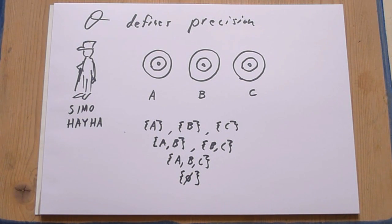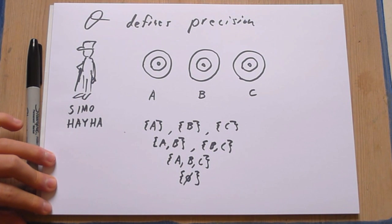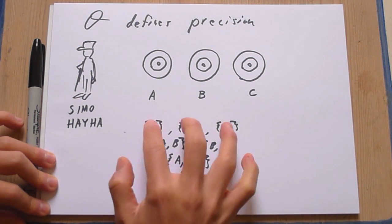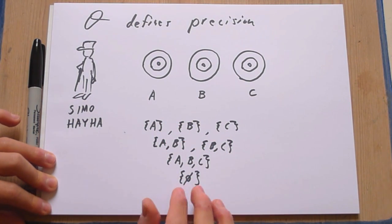Anyway, I'd say to you that this defines how Simo Heiha views these targets. He can be arbitrarily precise, and from that he can build up larger sets of imprecision if he wants to.